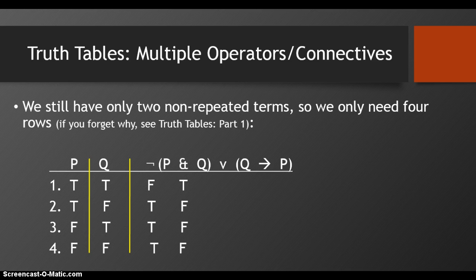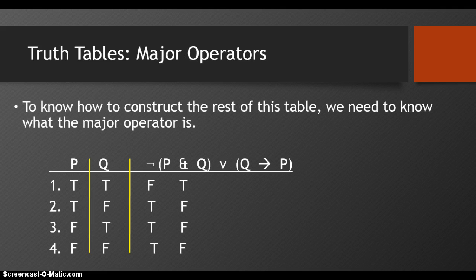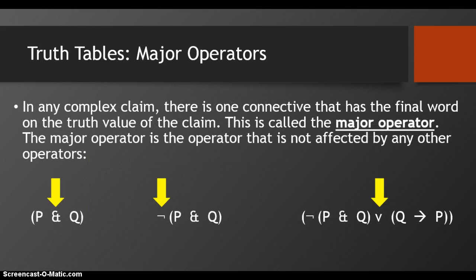We still have only two non-repeated terms, so we only need four rows. To know how to construct the rest of this table, we need to know what the major operator is. In any complex claim, there is one connective that has the final word on the truth value of the claim — this is called the major operator. The major operator is the operator that's not affected by any other operators. So in P and Q, the major operator — which is the only operator — is the AND. In 'it's not the case that P and Q,' the major operator is the negation.